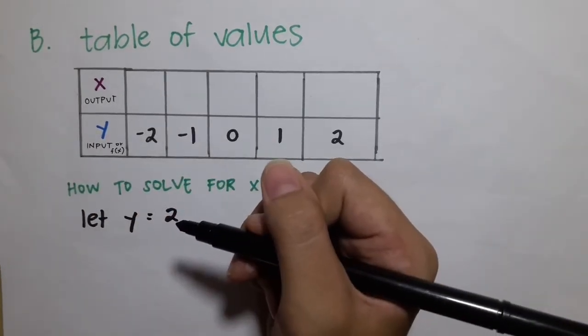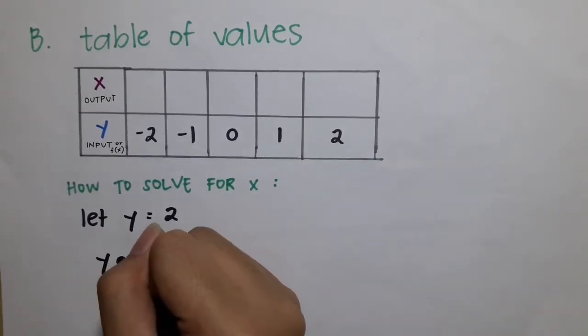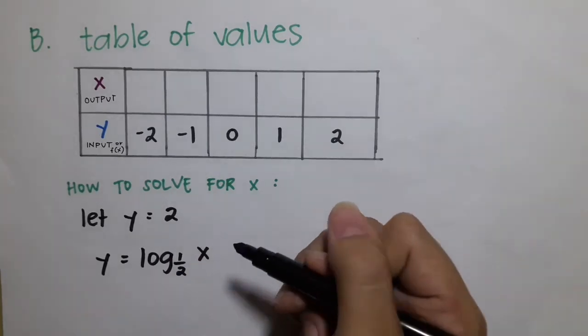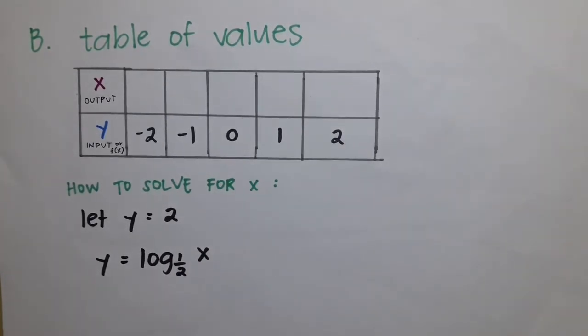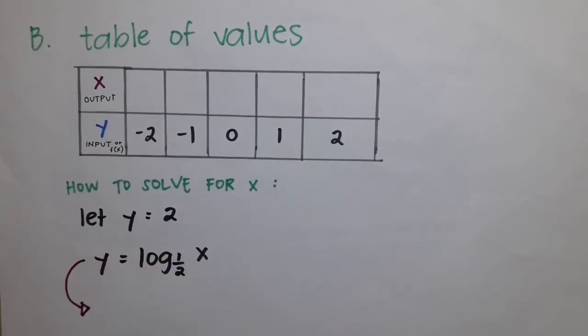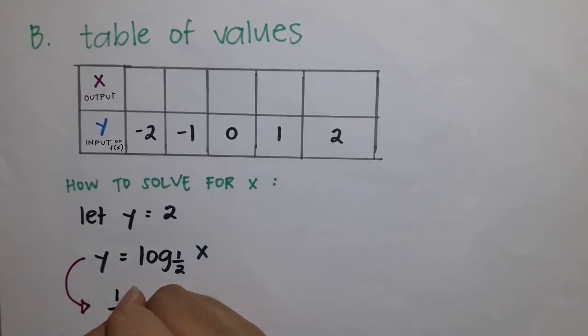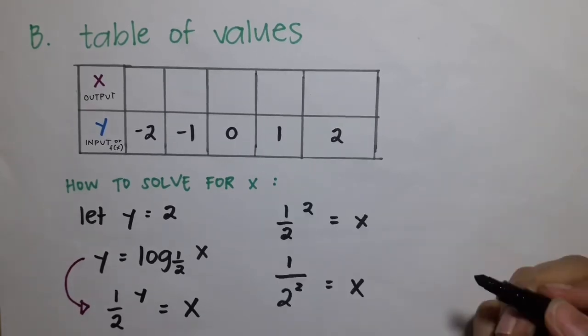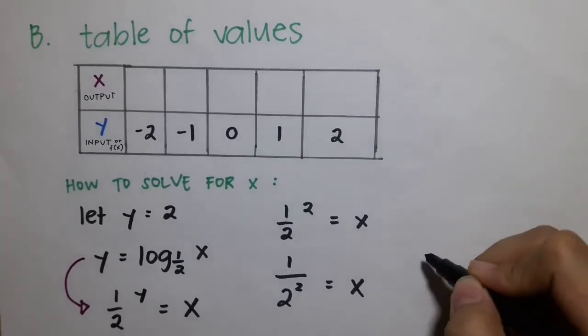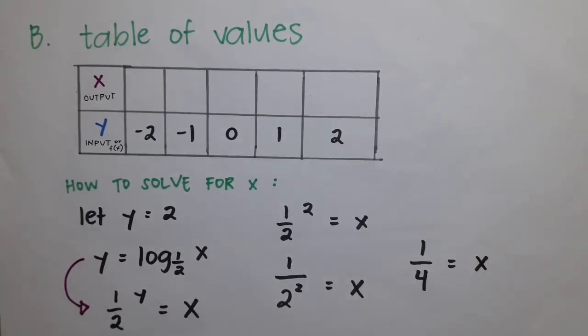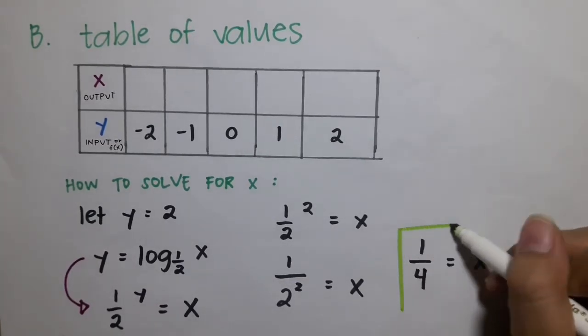How to find the x value? First, copy the logarithm equation that was given, which is y is equal to the logarithm of x to the base of 1/2. And then, convert it into exponential function. And then, substitute the y. And then, lastly, simplify it to find the x value.